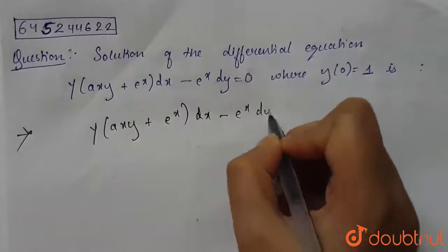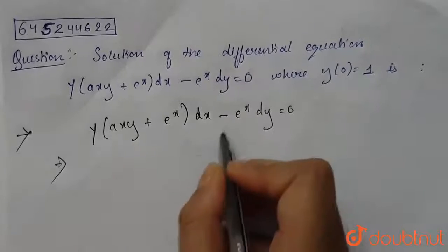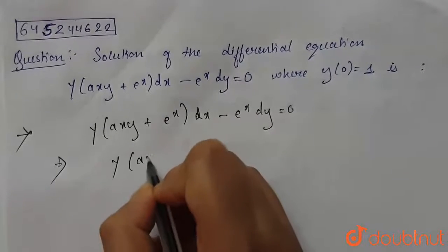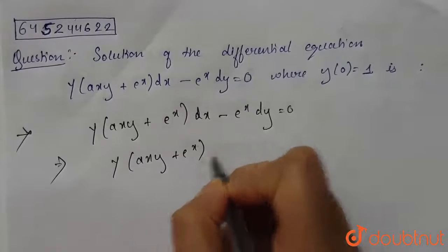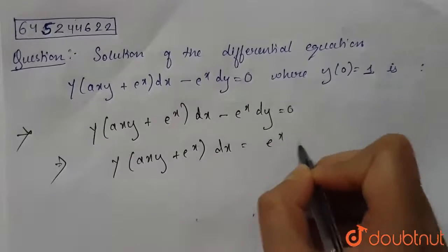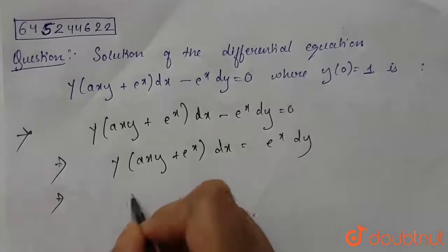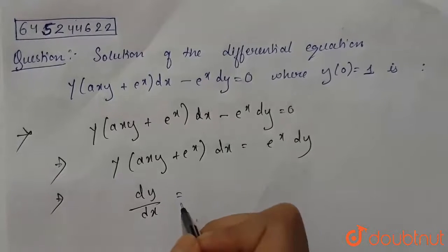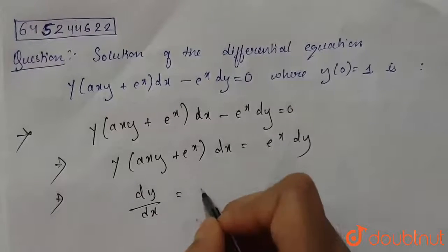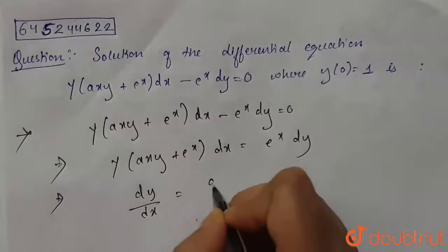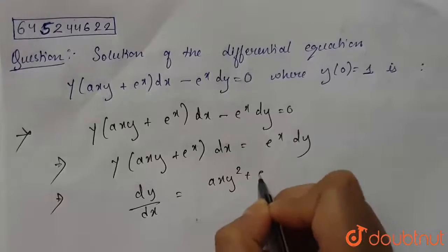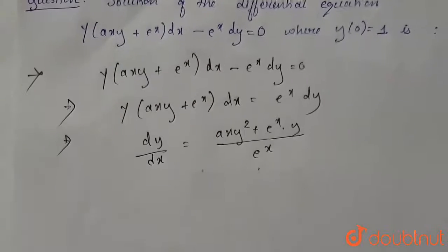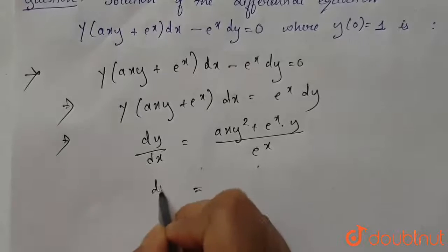If we take the eˣ dy term to the RHS, we get y(axy + eˣ)dx = eˣ dy. From here we can write dy/dx equals, multiplying out, axy² + eˣ·y, divided by eˣ. So dy/dx = axy²/eˣ + y.